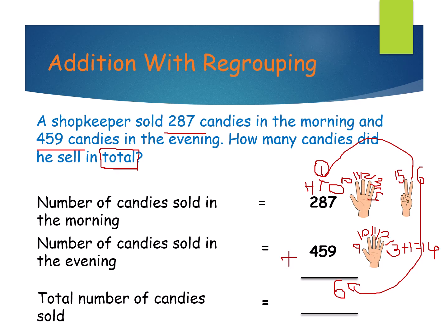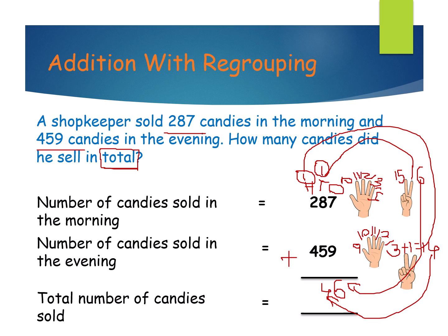This is also a two-digit answer, so 1 goes to the top of the hundreds place and 4 comes here in the tens place. Now in the hundreds place, the digits are 2, 4 and plus 1 carry over. 4 is the bigger number, so keep 4 in your mind and open 2 fingers. 4 after: 5 and 6, and plus 1 also. So 1 plus 2 plus 4 equals 7.